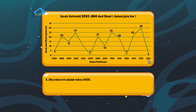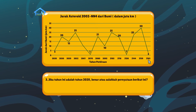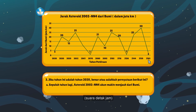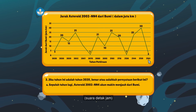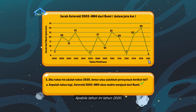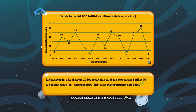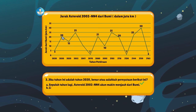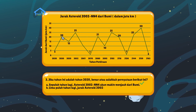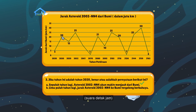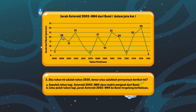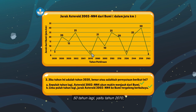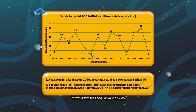3. Jika tahun ini adalah tahun 2020, benar atau salahkah pernyataan berikut ini? A. 10 tahun lagi asteroid 2002 NN4 akan makin menjauh dari bumi? Jawabannya adalah benar. Apabila tahun ini tahun 2020, 10 tahun lagi asteroid 2002 NN4 akan makin menjauhi bumi. B. Benar atau salahkah jika dinyatakan 50 tahun lagi jarak asteroid 2002 NN4 ke bumi tergolong berbahaya? Jawabannya adalah benar. Apabila tahun ini adalah tahun 2020, 50 tahun lagi yaitu tahun 2070, jarak asteroid 2002 NN4 ke bumi tergolong berbahaya.